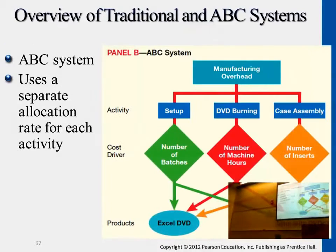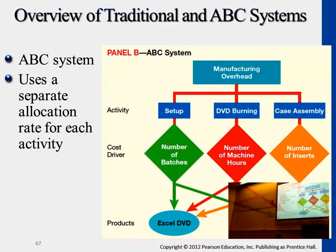A better way to allocate the cost would be to separate different types of activities, which is the focus for this chapter. We want to understand how setup costs occur for two different types of products — how does DVD-brain cost differ, how does case assembly cost differ? Based on the different activities we identified, we then assign a specific allocation base for those activities.